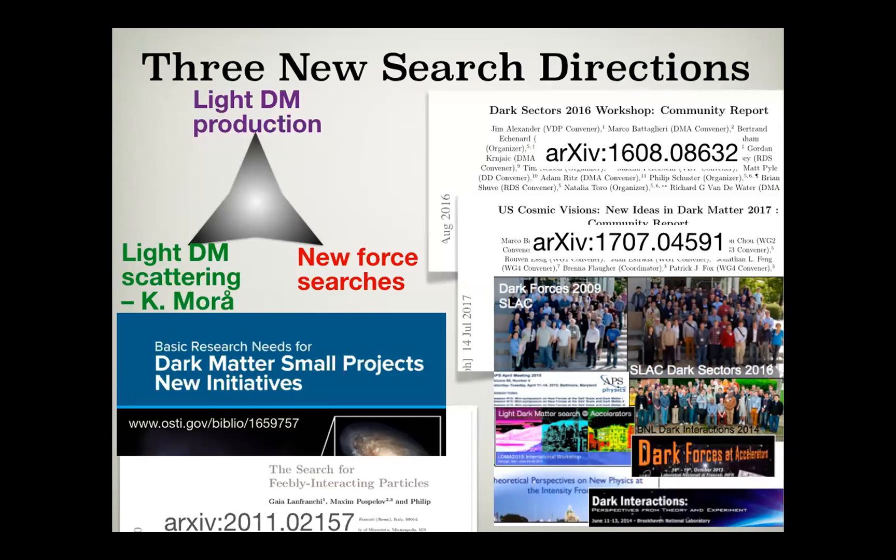Loosely speaking, we can divide these into three regions: dark matter scattering, which in the low mass region was nicely covered by Knuth's talk, searches for new forces and light dark matter production. Like I said, this has really been an area that's exploded over the last decade, and I've tried to give you some references on this slide to community reports from major workshops, the dark matter small projects, new initiatives, basic research needs report from DOE, and a recent review by Guy Orfranchi, Maxine Paspalov, and Philip Schuster.